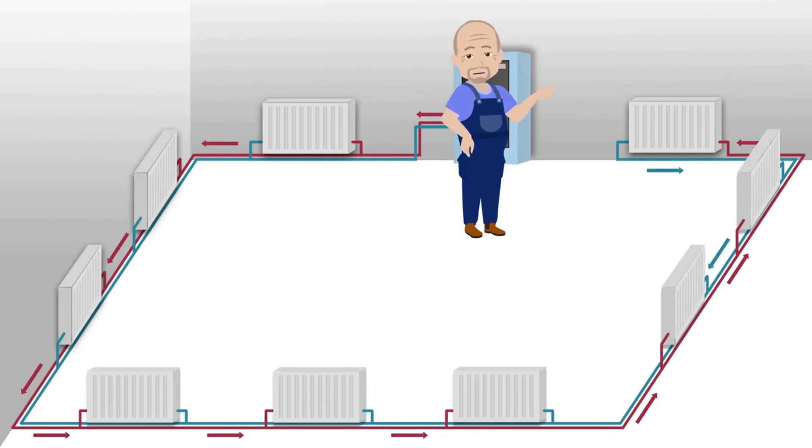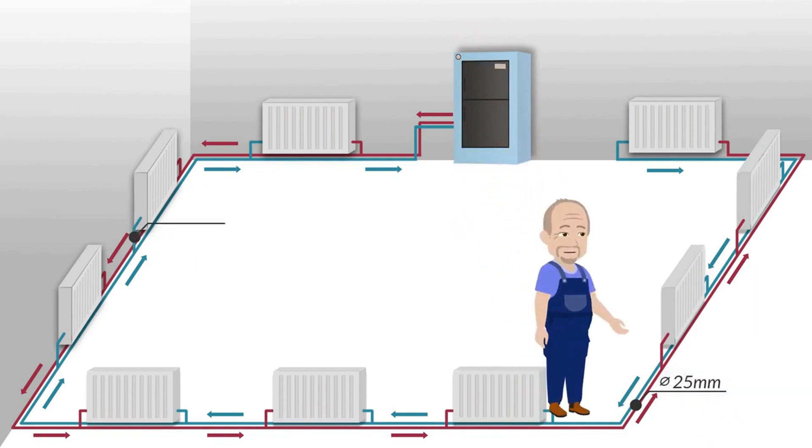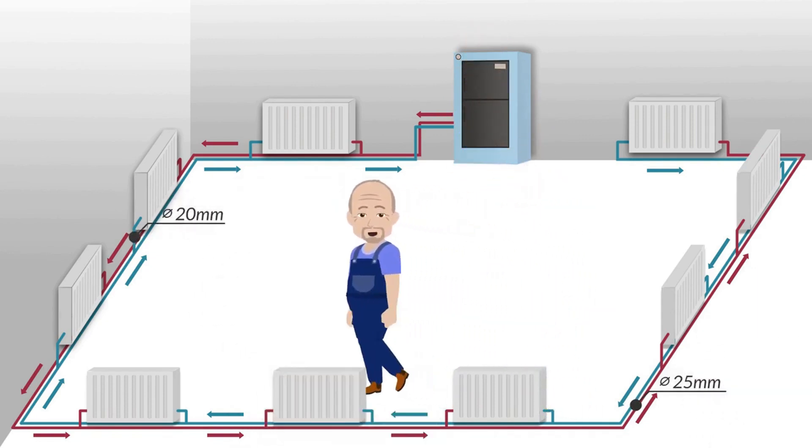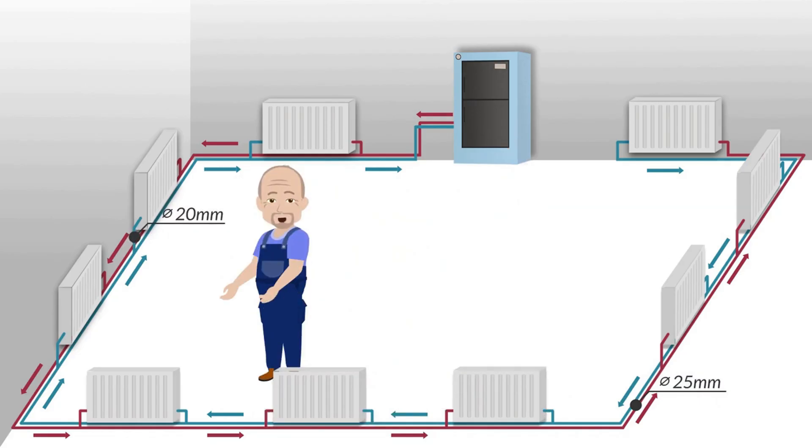And through the second pipe, the cooled coolant, collecting the return from all the radiators, heads back to the boiler. Most often in this installation system, the supply and return pipes are 25 millimeters in diameter and the heaters are directly connected by a 20 millimeter diameter pipe.